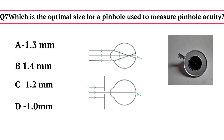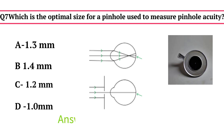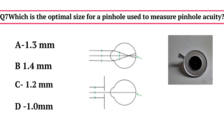Which is the optimal size for a pinhole to measure pinhole acuity? The options are: A - 1.3 mm, B - 1.4 mm, C - 1.2 mm, D - 1 mm. The optimal size is 1.2 mm, as a larger pinhole does not neutralize refractive error, and smaller pinholes can increase diffraction and decrease the amount of light entering the eye.